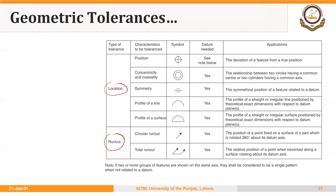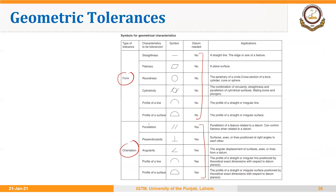Very important with respect to this course are geometric features of position, circular runout, and total runout. Apart from those, we will especially require flatness, parallelism, and perpendicularity, and on occasion some other features as well.